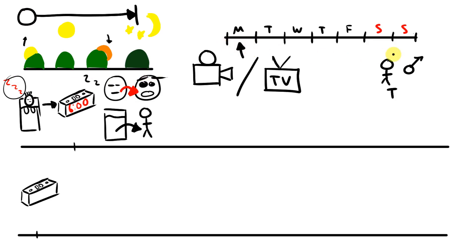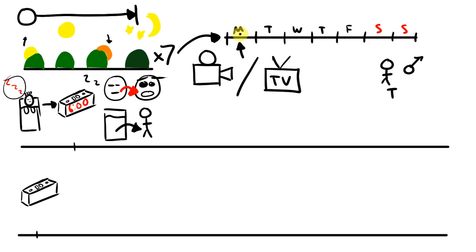This is a week. There are seven days in a week: Monday, Tuesday, Wednesday, Thursday, Friday, Saturday, Sunday. On Monday, Tom begins his day at six o'clock in the morning.